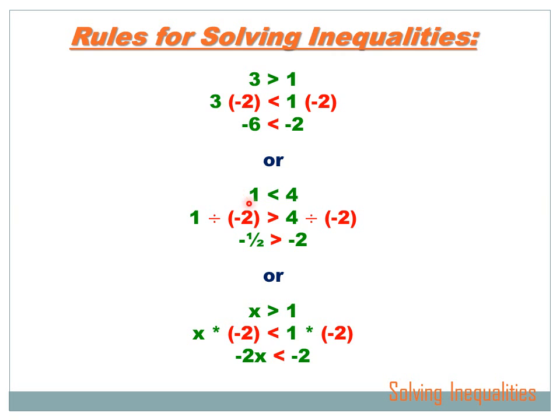Or, let's say I had 1 is smaller than 4, and I wanted to divide both sides by minus 2. If I divide both sides by minus 2, I've got to turn around my inequality sign. If I divide 1 by minus 2 I get minus one-half, and if I divide 4 by minus 2 I get minus 2, and minus one-half is larger than minus 2. It works with a variable too — if x is larger than 1 and I multiply both sides by minus 2, I've got to flip the sign to 'is smaller than,' because minus 2x is smaller than minus 2.